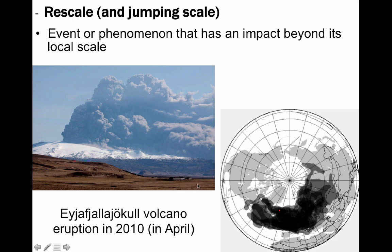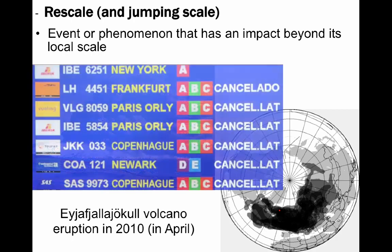The 2010 volcanic eruption of Eyjafjallajökull, which is Icelandic for Iceland Mountain Glacier. The eruption began in March and smoldered until May. In that time, the volcano in Iceland disrupted air travel throughout Europe and the Northern Hemisphere. The grounding of thousands of flights at times cost upwards of $200 million a day.